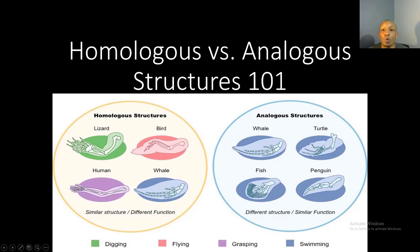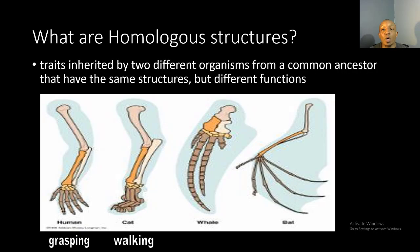Good evening everyone, we're back once again with another amazing science tutorial video. I'm Coach Spivey, and in this video we're going to be looking at homologous versus analogous structures. So let's begin. Homologous structures are traits inherited by two different organisms from a common ancestor — they have the same structures but different functions.